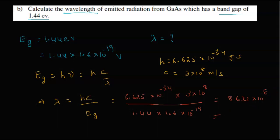That means 10 power minus 8 is equal to one angstrom, so 8633 angstroms. This is the wavelength. Thank you.